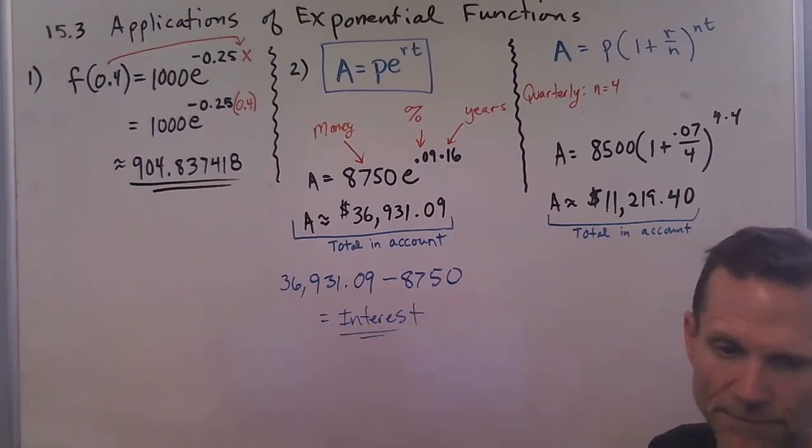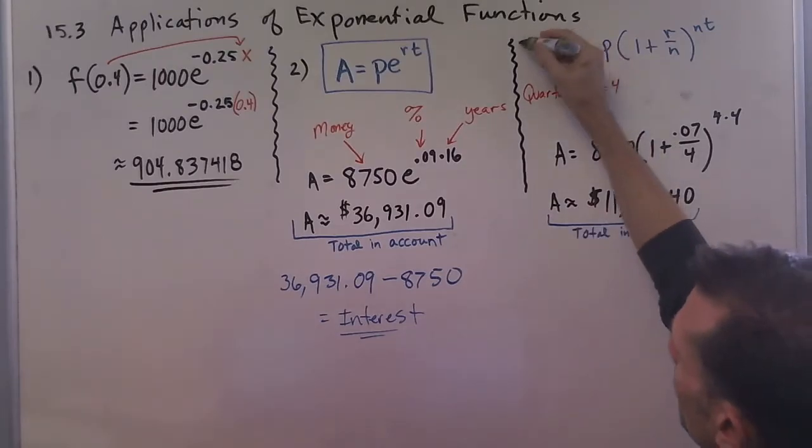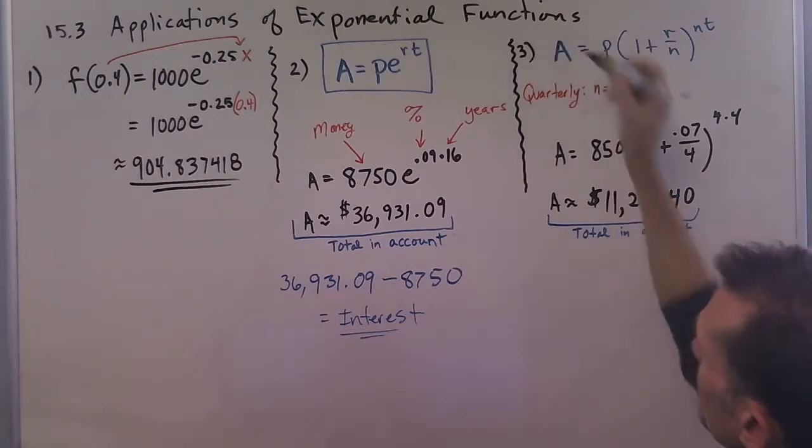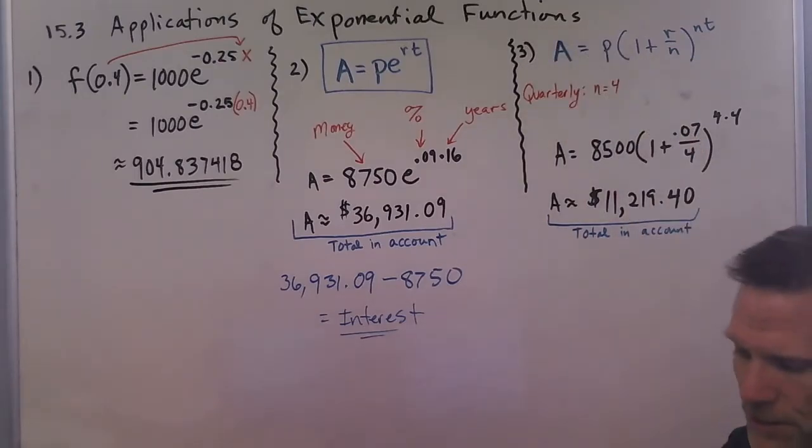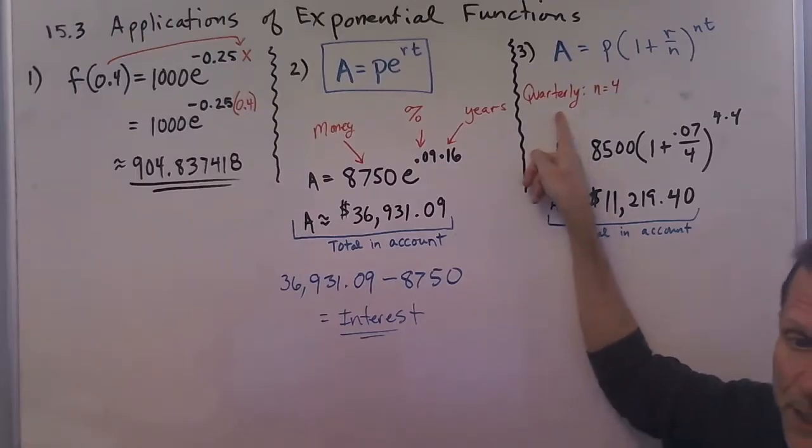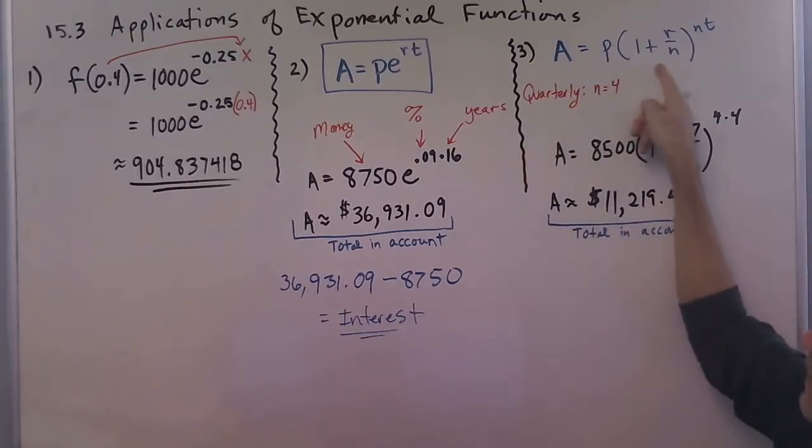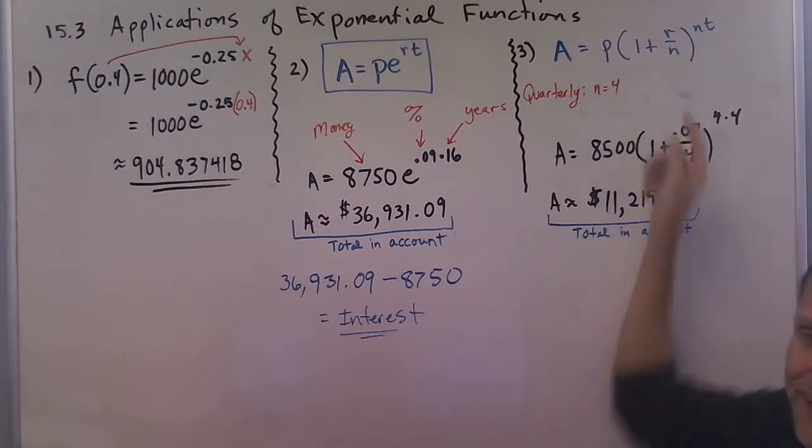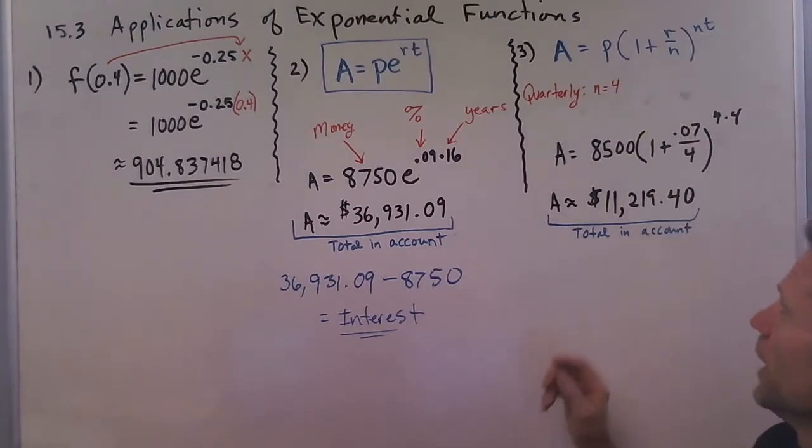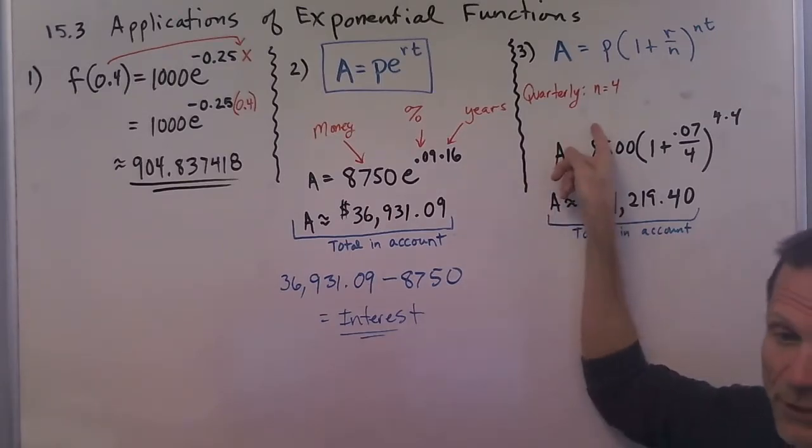Now problem three says that the interest is compounded quarterly. So this is the compound interest formula when it's not continuous. There's different types of compounding: daily, quarterly, semi-annually, monthly. You'll have to learn what your n value is for those different ones.